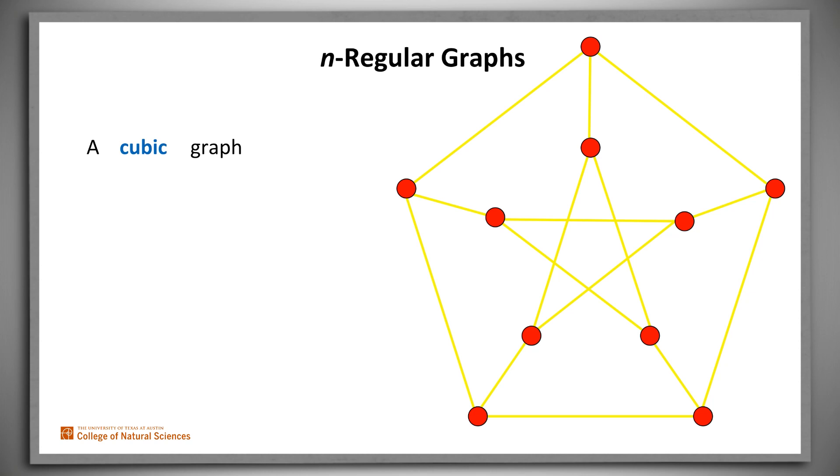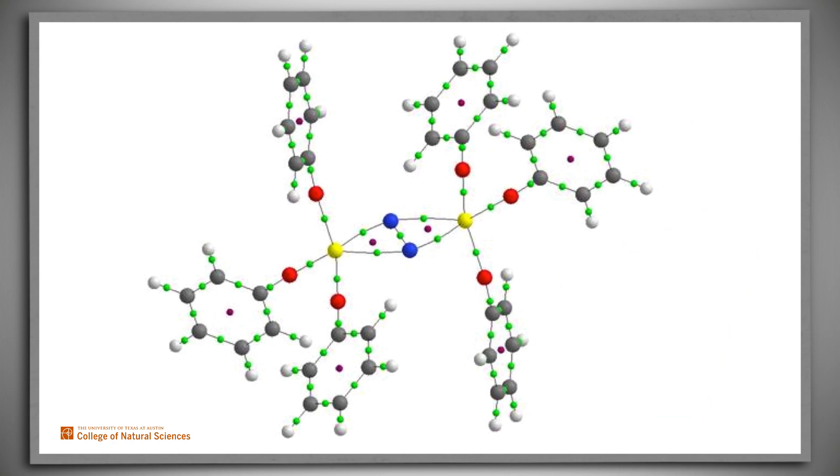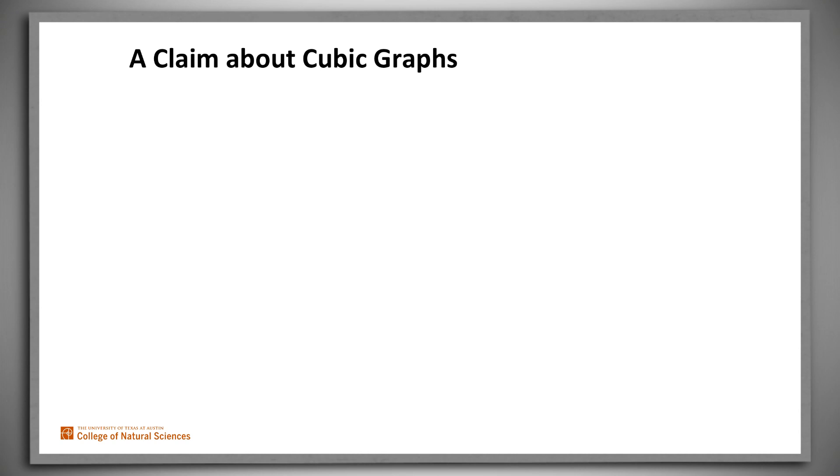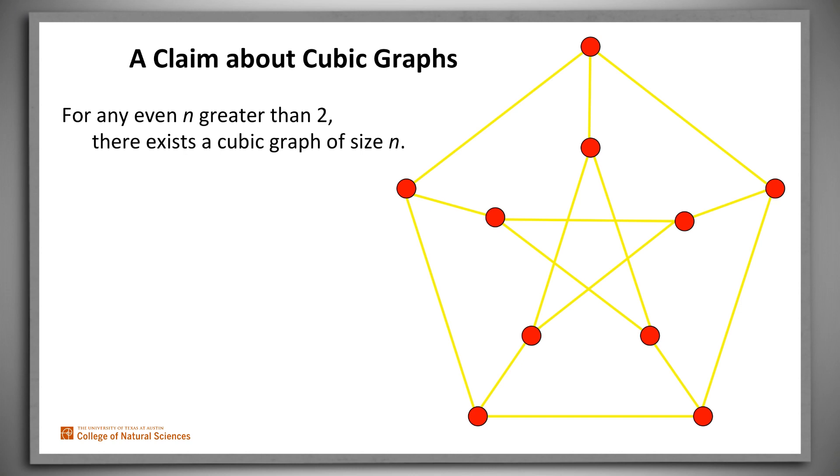Graphs are important because they can be used to model a huge range of things, from molecular structures to the internet. So claims about them matter. Consider the following claim. For any even n greater than 2, there exists a cubic 3 regular graph of size n. We want to prove this claim. We can't do that by exhibiting any individual cubic graph, say this one. All this example proves is that the claim is true when n equals 10. We need to prove that it's true for every even n greater than 2. We can do that by construction. We'll present an algorithm whose input is n and whose output is a cubic graph of size n.